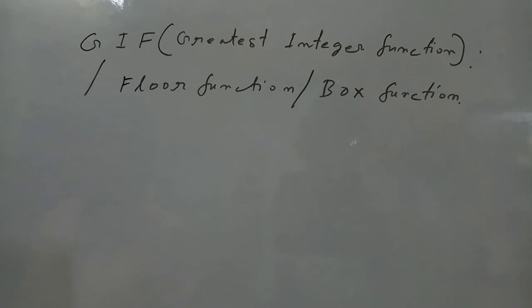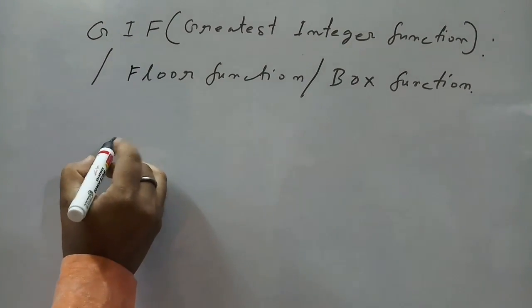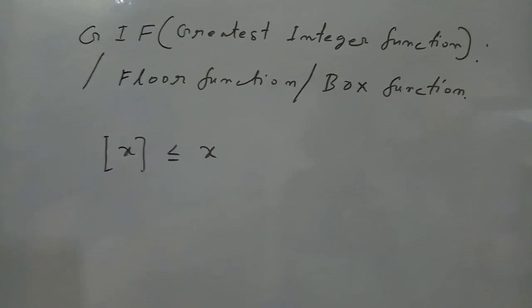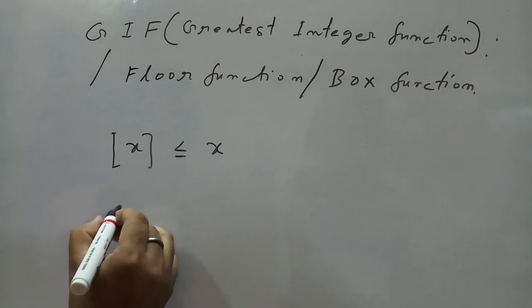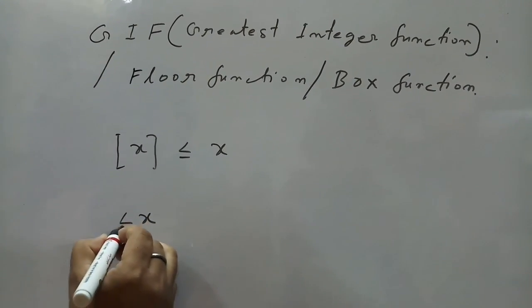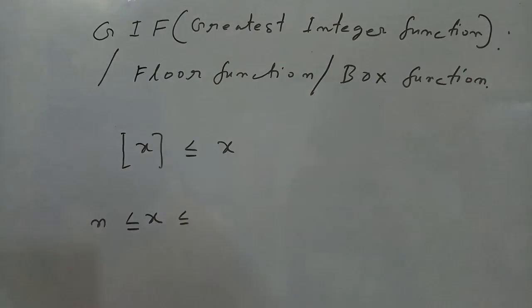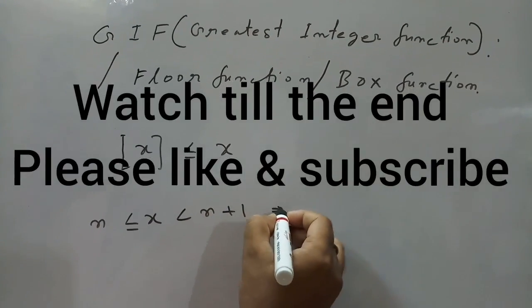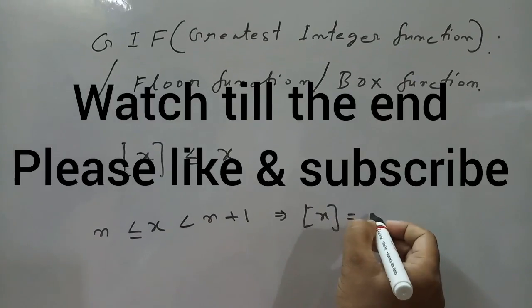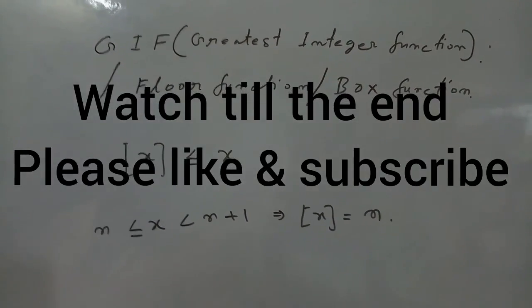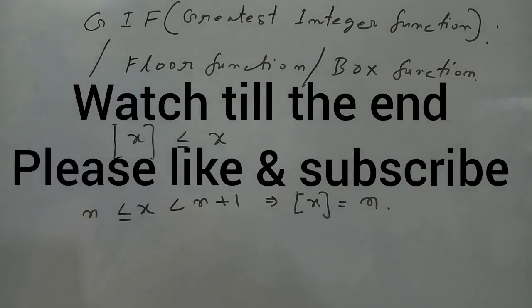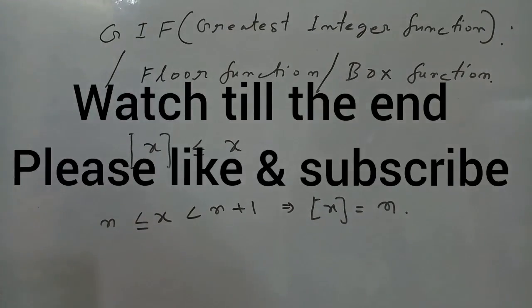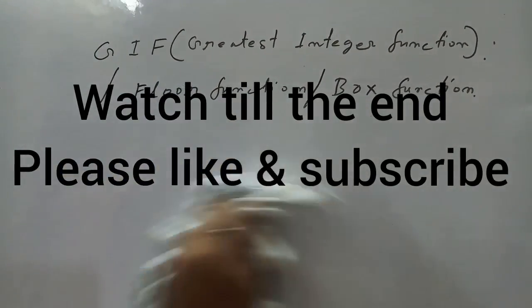What is the Greatest Integer Function? The Greatest Integer Function, Box[X], is less than or equal to X. When the value of X lies between N and N+1, the value of Box[X] equals N.